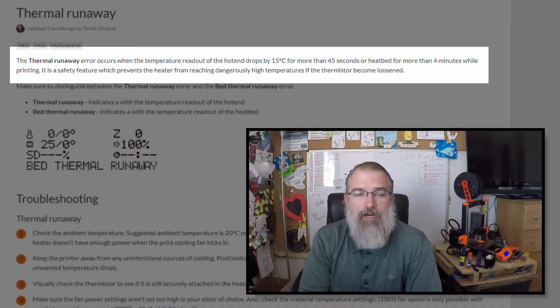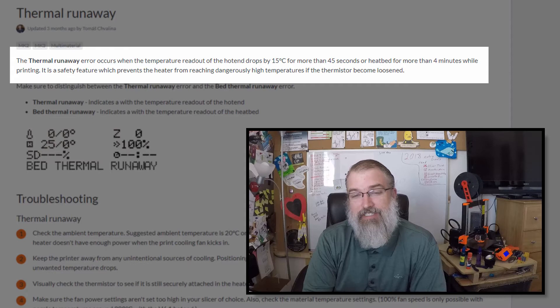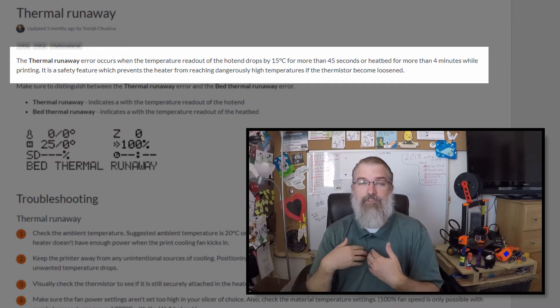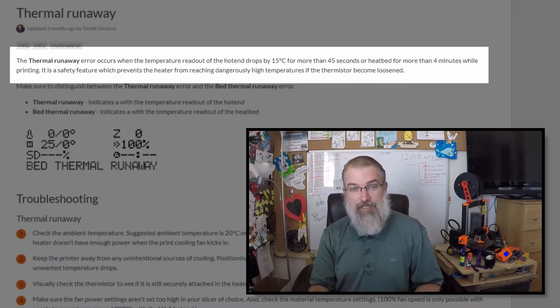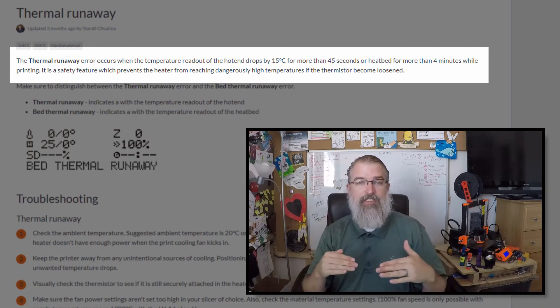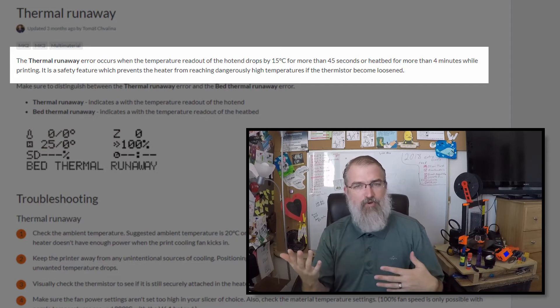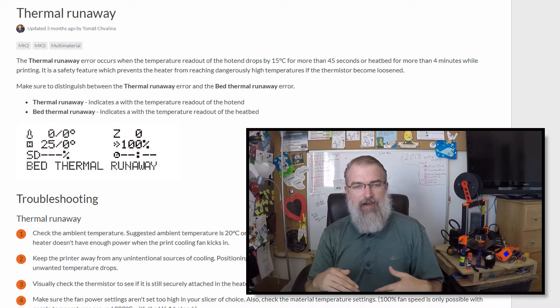So thermal runaway occurs when the temperature readout of the hot end drops by 15 degrees Celsius for more than 45 seconds or the heat bed, which is my case, for more than four minutes while printing. So in my case, it obviously went down 15 degrees C. So it went from 60 to, I guess, 45 for more than four minutes. And then it cut out.